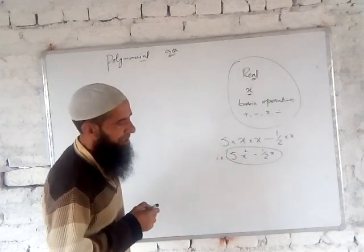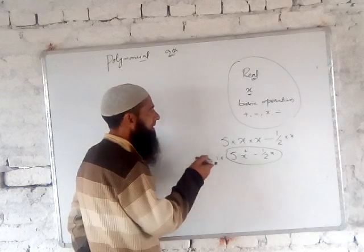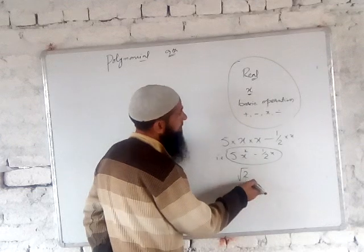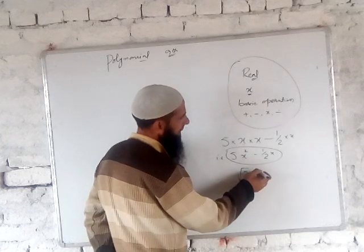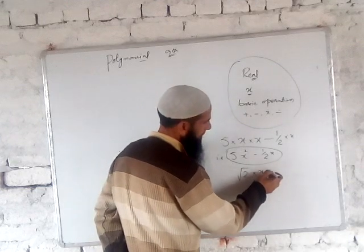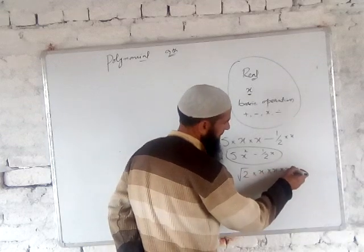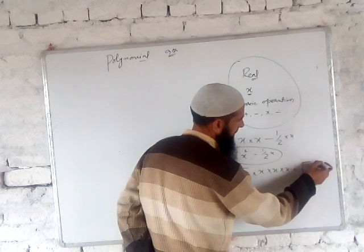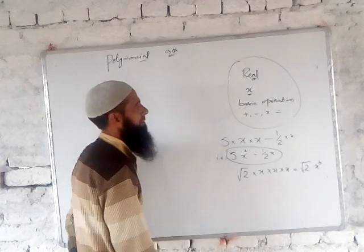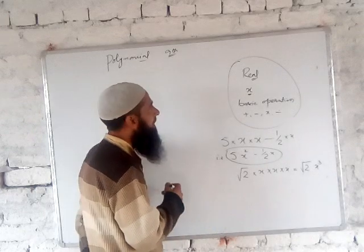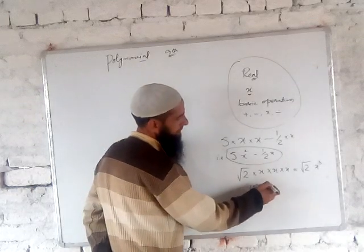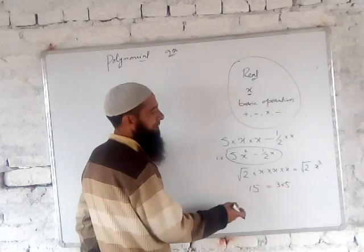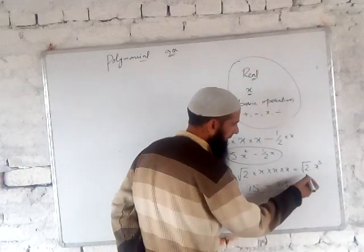We take another algebraic expression. Say 15 — that can be written as 3 times 5. Since 3 times 5 equals 15, this is also an algebraic expression.